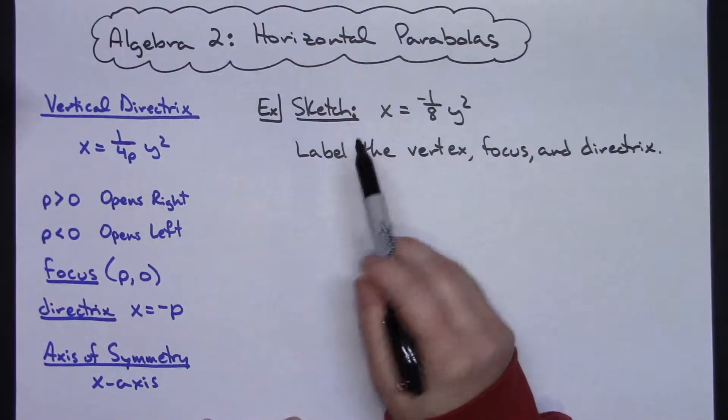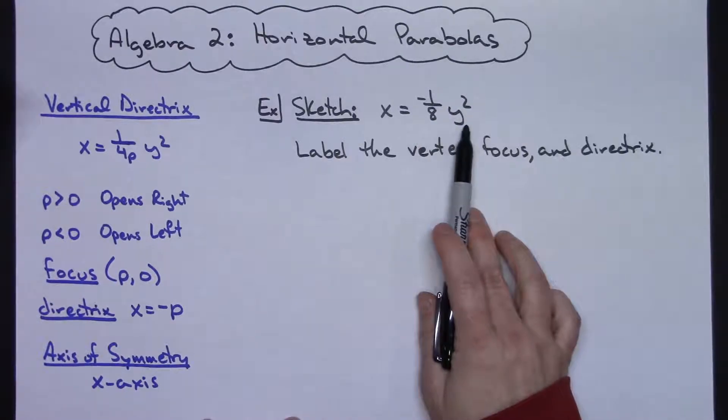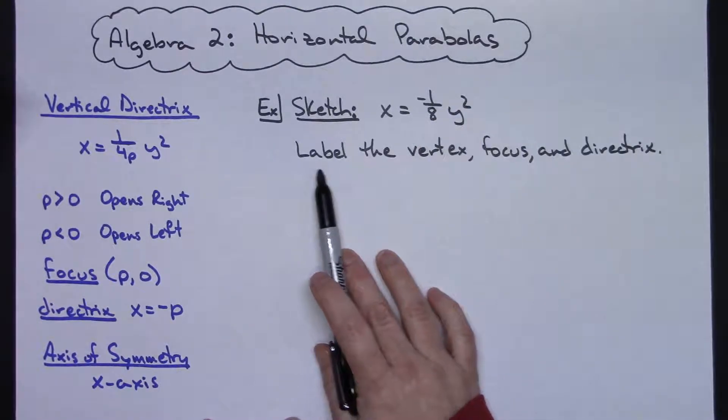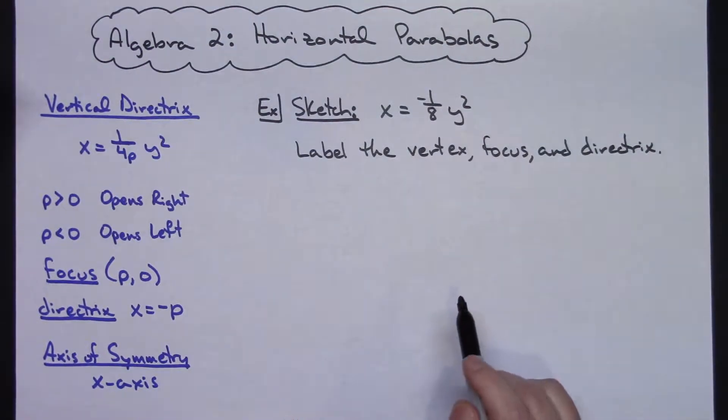In this example I'm going to sketch x equals negative 1 eighth y squared. So I need to label my vertex and my focus and my directrix on my sketch after I get all this done. Now the first thing I need to do is I need to locate p because everything is centered around my p.